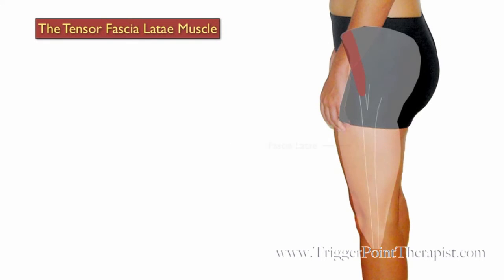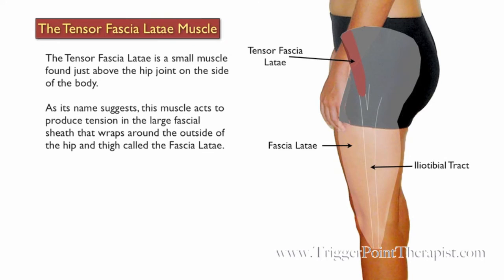The tensor fasciae latae muscle. The tensor fasciae latae, or TFL, is a small muscle found just above the hip joint on the side of the body. As its name suggests, this muscle acts to produce tension in the large fascial sheath that wraps around the outside of the hip and thigh, called the fascia latae.